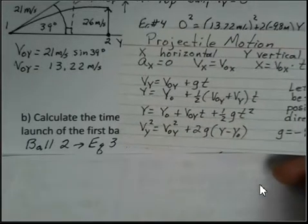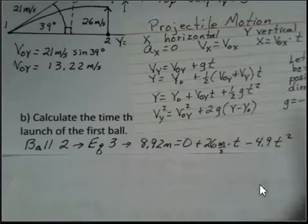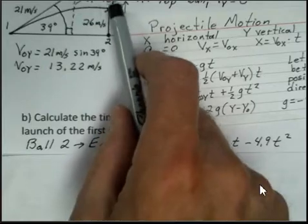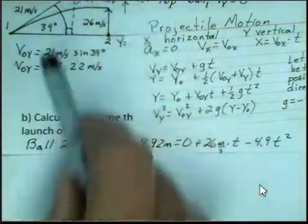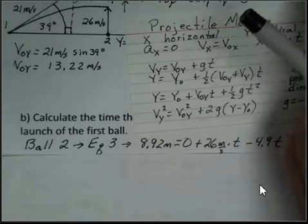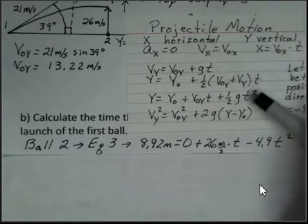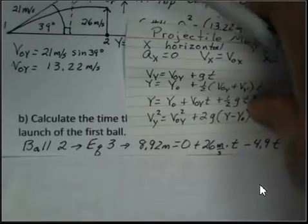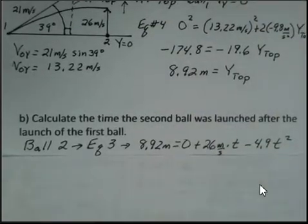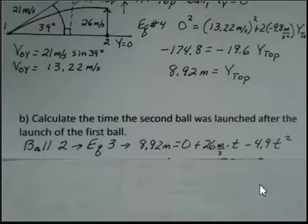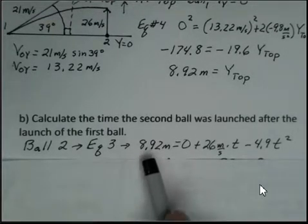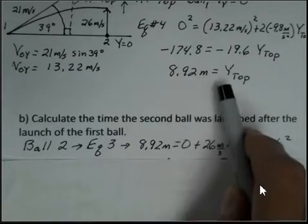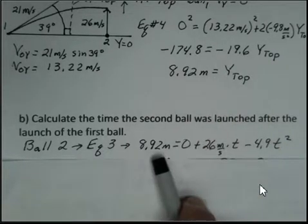Ball number two is launched at 26 meters per second, but if ball number one wasn't there, it would keep on going. So we do not know the final velocity for ball number two. So we pick equation number three. It does not have the final velocity variable in it. So we know that the position where we are is 8.92, and this is working vertically. We found that from the height of ball number one.